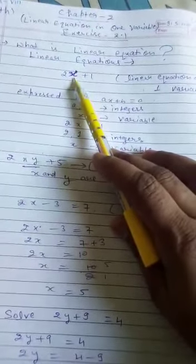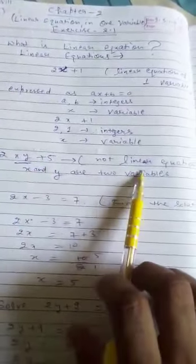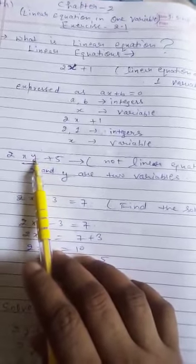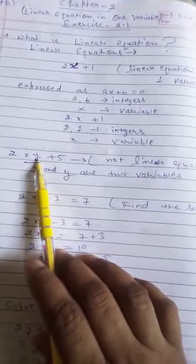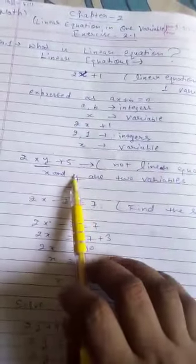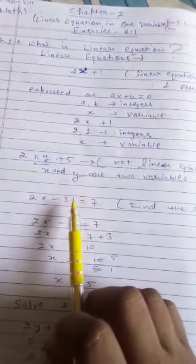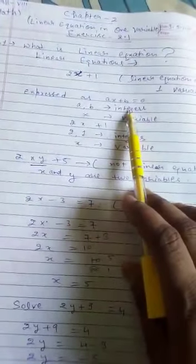If I am writing 2xy plus 5, this will be not linear equation of one variable. This is linear equation of two variable x and y. Here two variables we have used. So question can be given, many equations can be written and it can be given to you find out the linear equation.